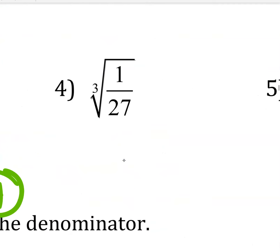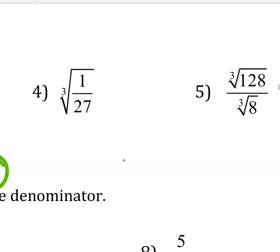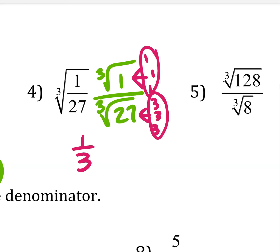Numbers four and five are cube roots. For cube roots, you need groups of three, not groups of two. On number four: after splitting the radical, one is a perfect cube, and 27 is also a perfect cube, so the threes break out cleanly. No rationalizing needed on that one.